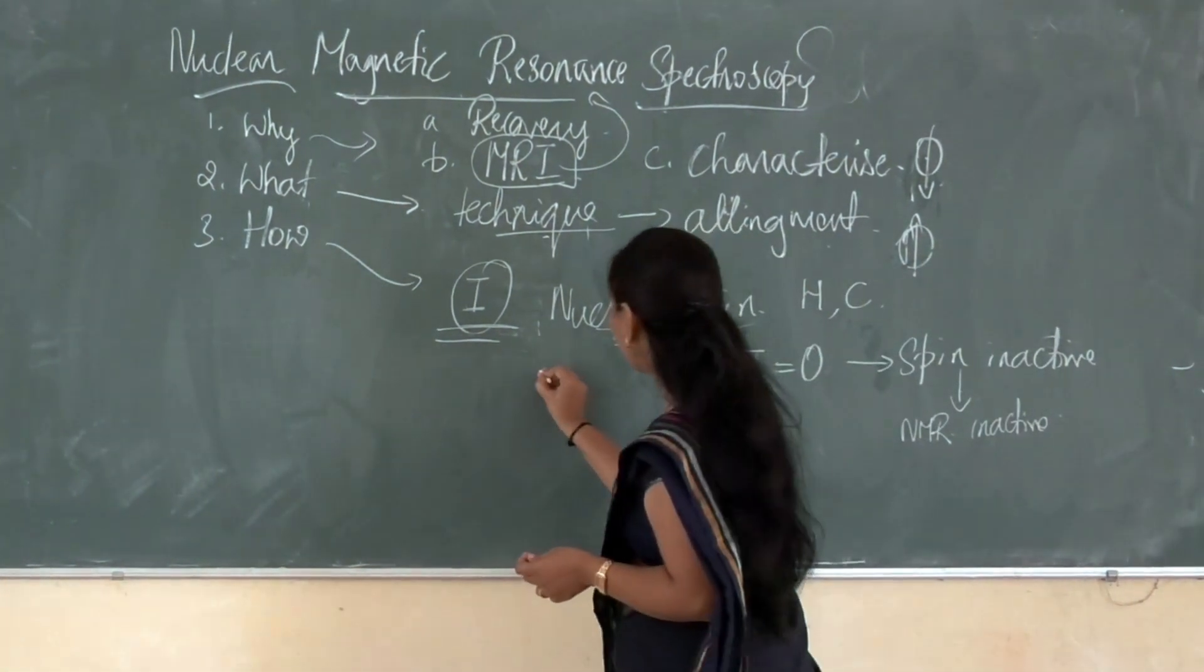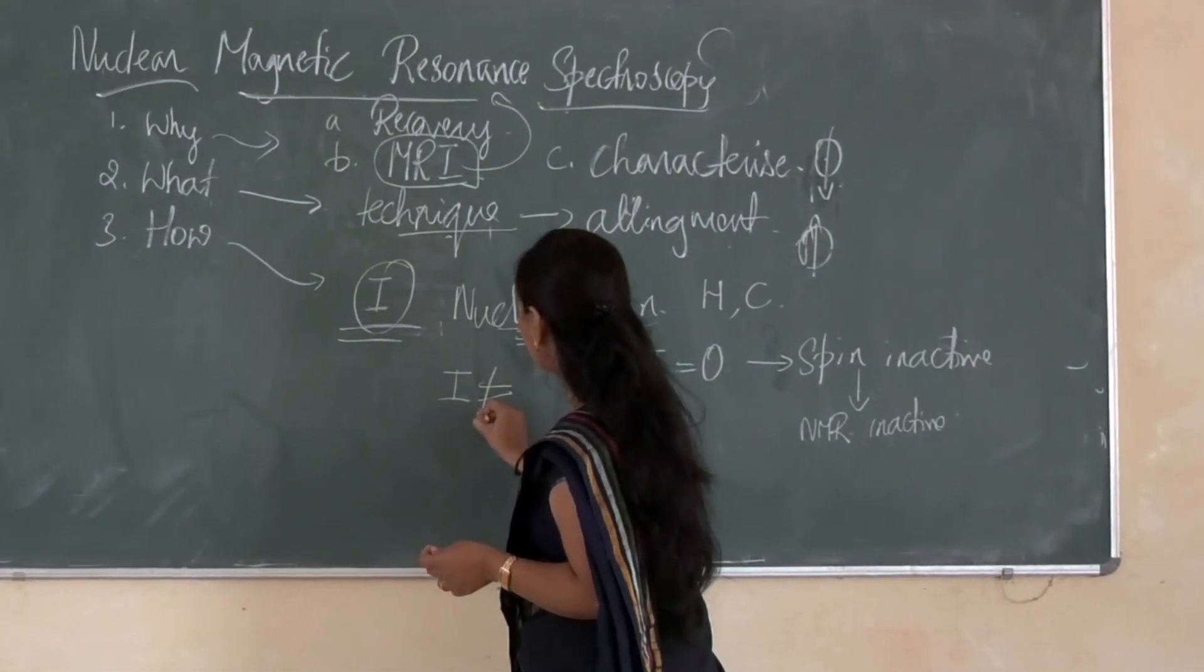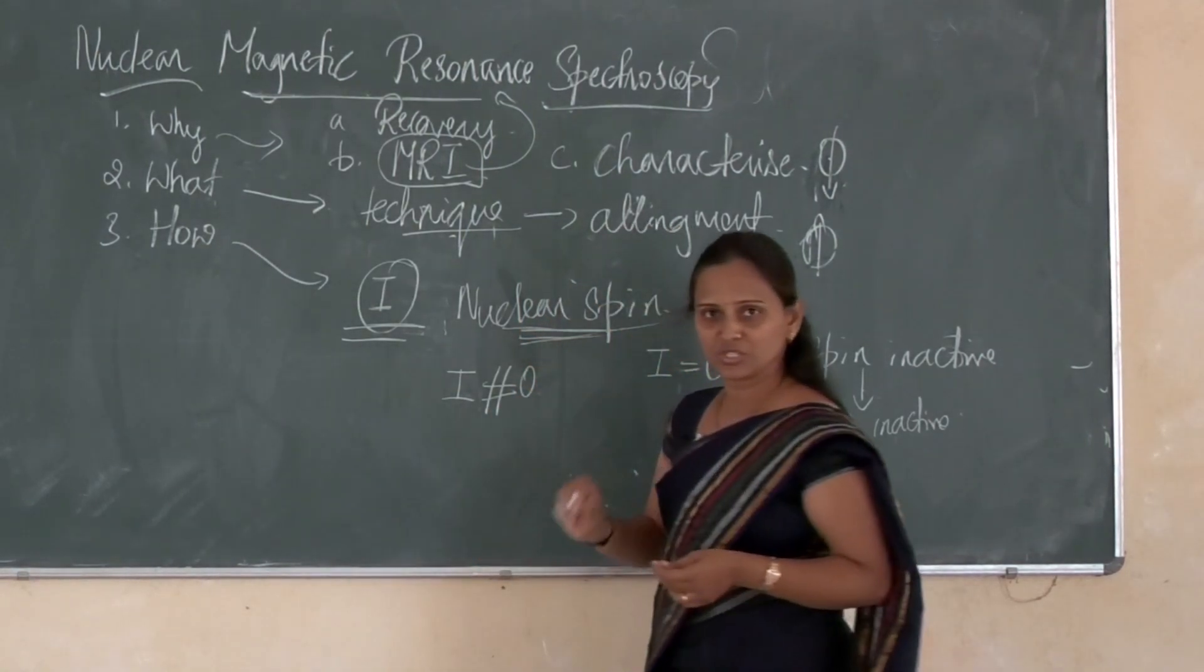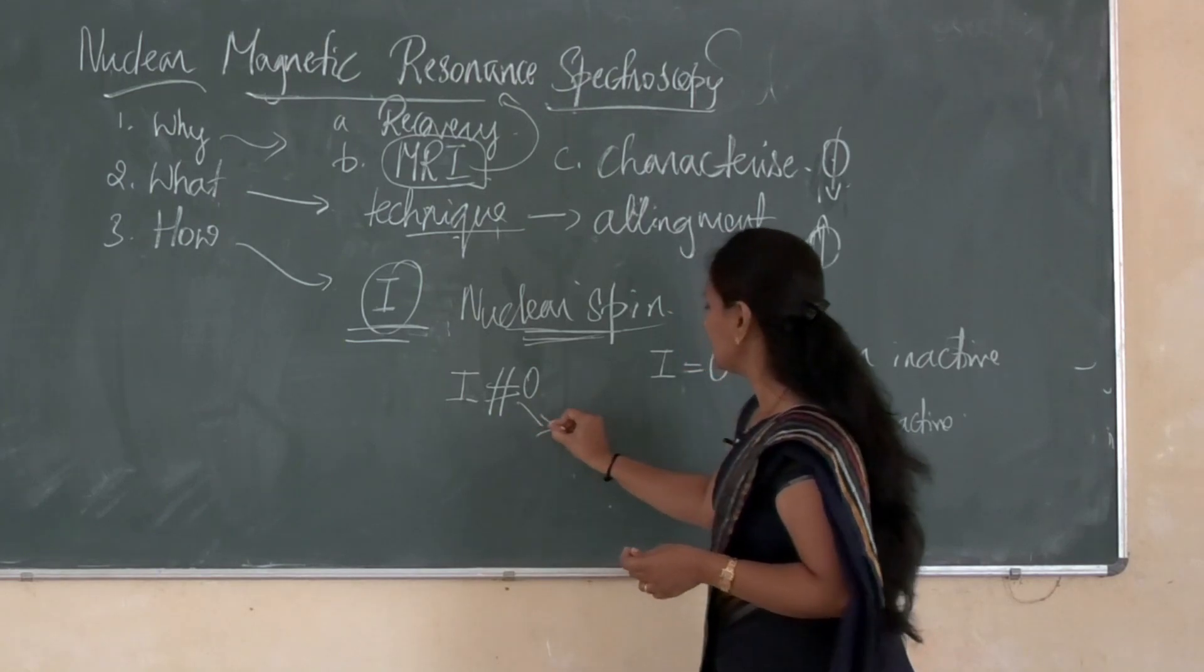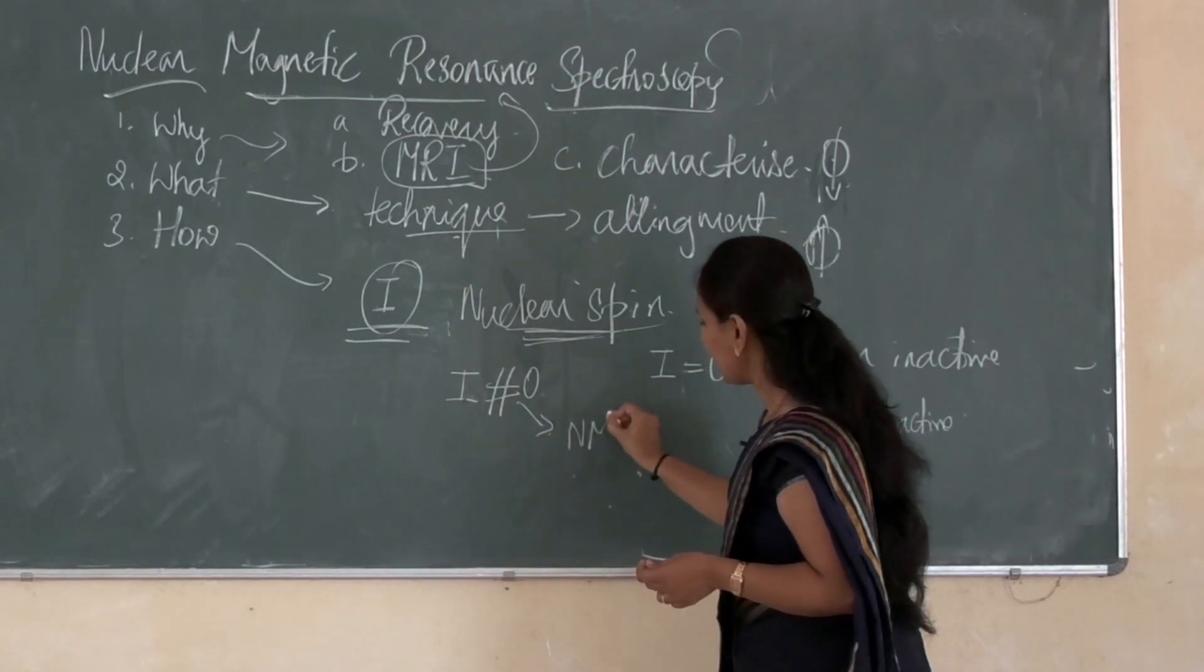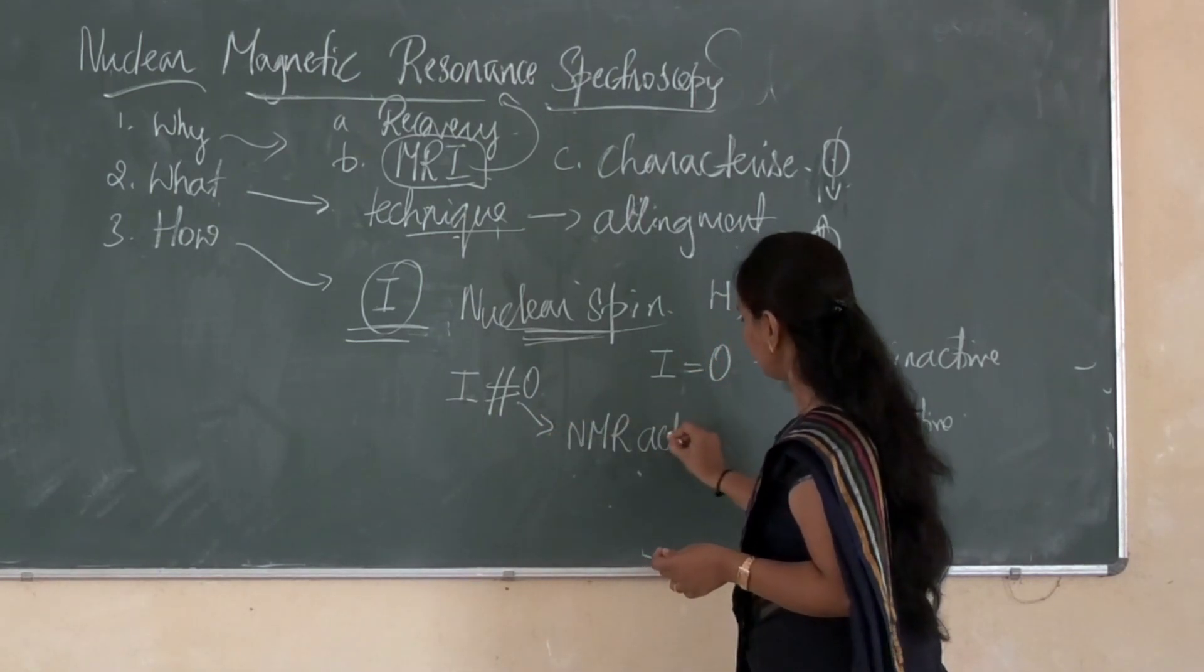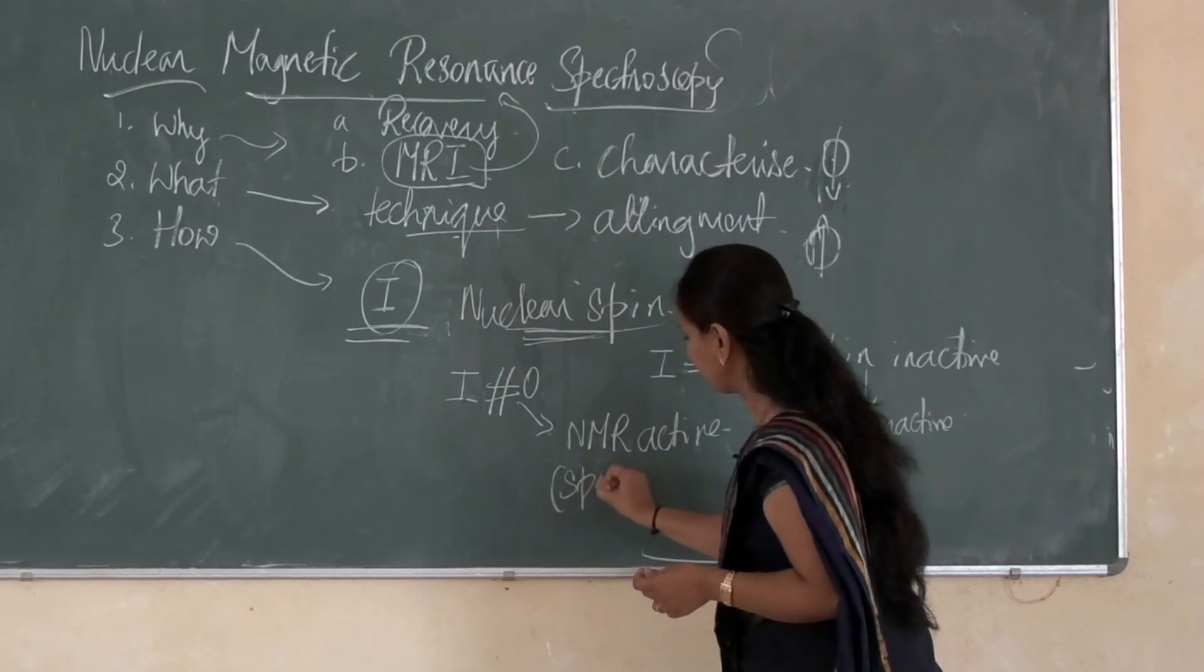If a nuclei is having I, which is not equal to zero, that is, nuclear spin will not be equal to zero, such nuclei are called as NMR active. That is, these are spin active.